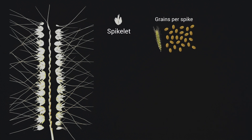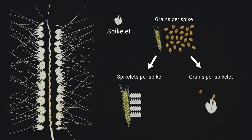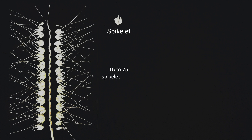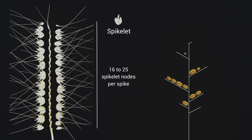The number of grains per spike can be physically and genetically dissected into two subcomponents: spikelets per spike and grains per spikelet. A normal spike can generate between 16 and 25 spikelet nodes, and within a spikelet, grains at the first and second positions are larger than those at the third, fourth, or higher positions.